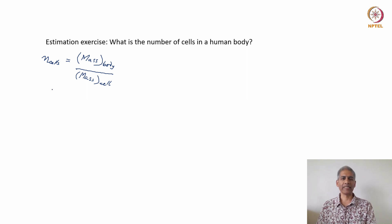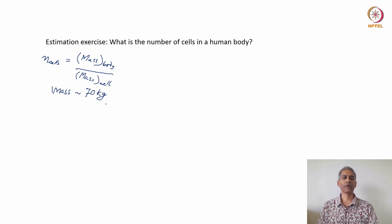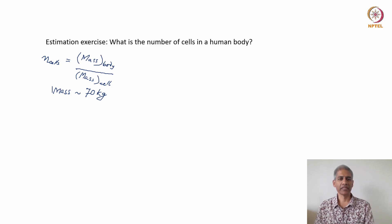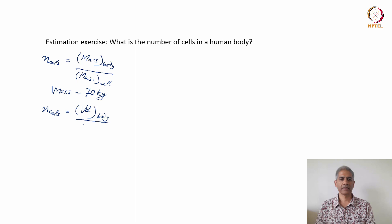The numerator might be easy to get a value for. The mass of an average human body for an Indian could be approximately 70 kilos. But how do I find out the mass of an average human cell? There's no good way to know that directly. Another way to approach the problem is to look at volume relationships: the number of cells equals the volume of the body divided by the volume of an average cell.